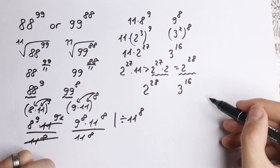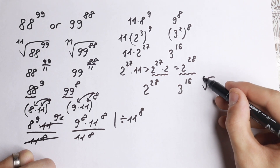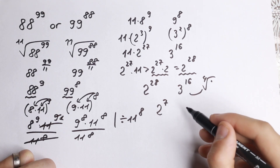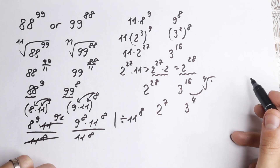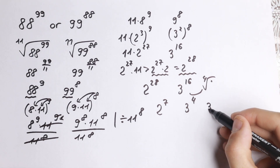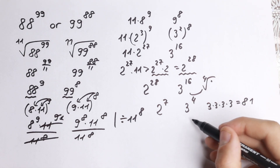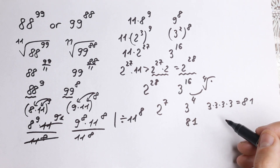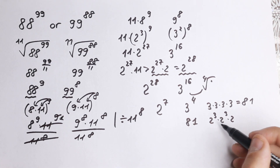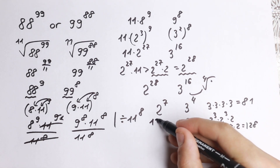Now, looking at the exponents 28 and 16, both are divisible by 4. So we can take the 4th root from both sides. From the left we get 2 to the 7th, and from the right 3 to the 4th. We know 3 to the 4th is 3×3×3×3 which equals 81. And 2 to the 7th is 2 cubed times 2 cubed times 2, which is 8 times 8 times 2, equal to 128. So on the left hand side we have 128, and on the right 81.